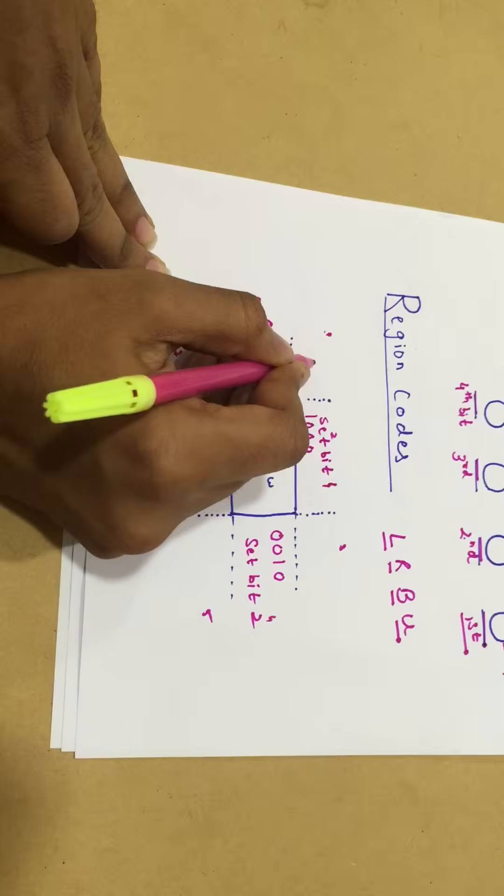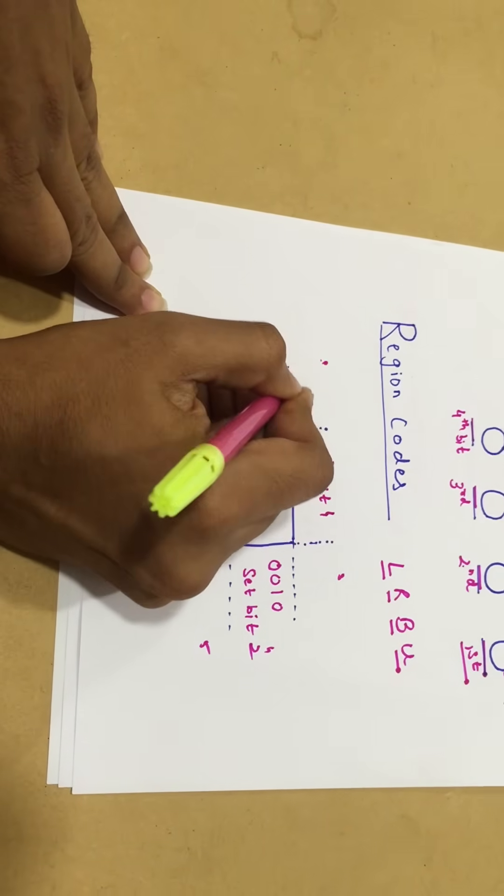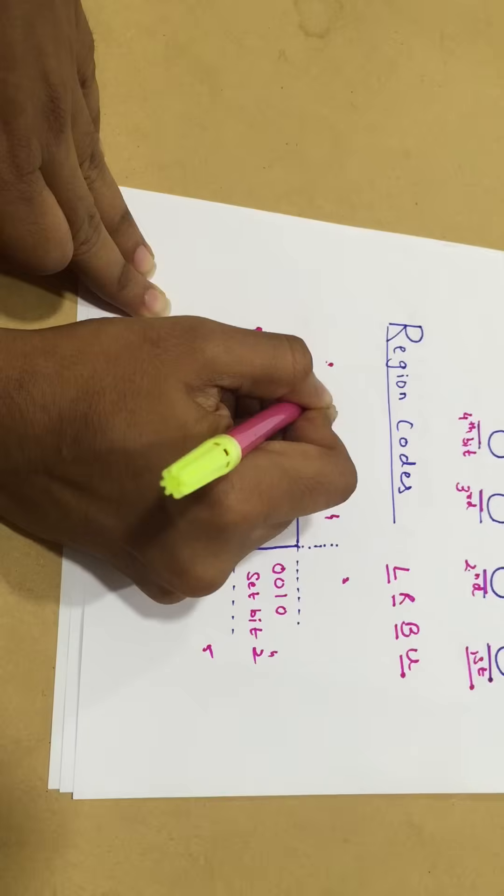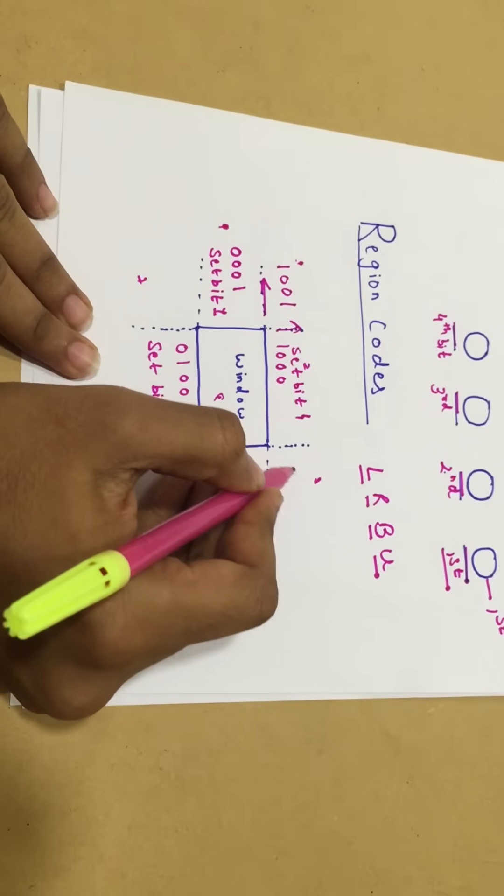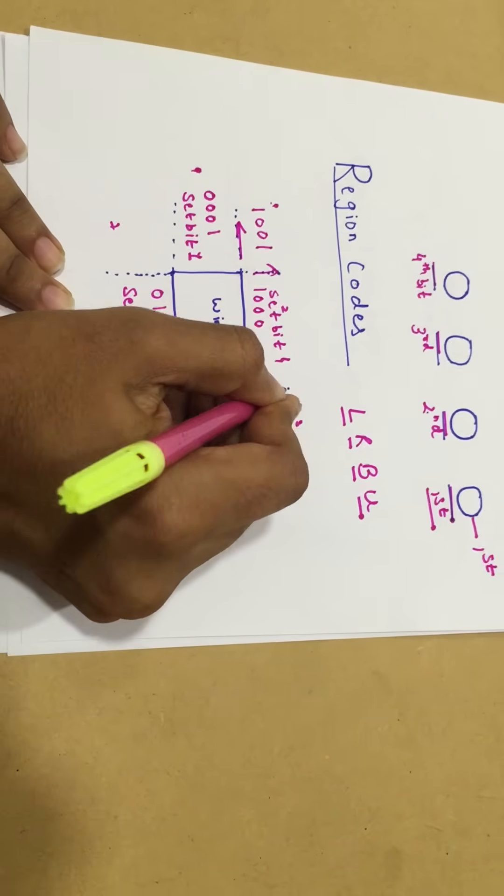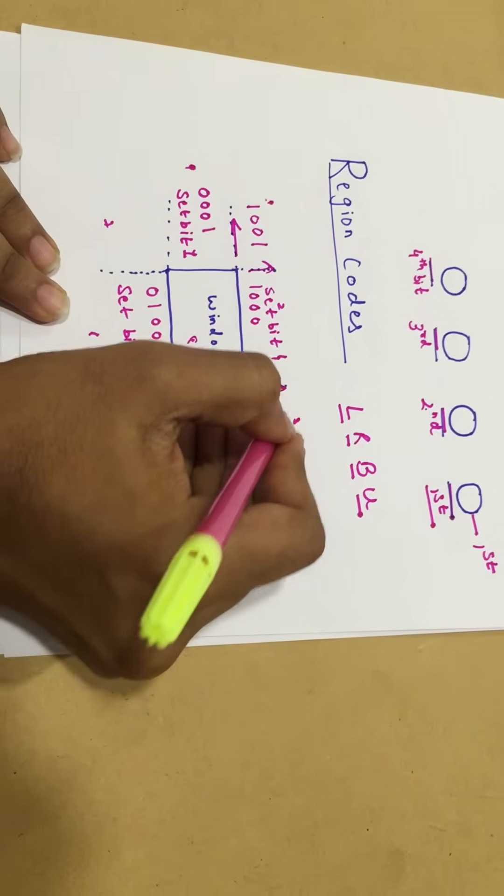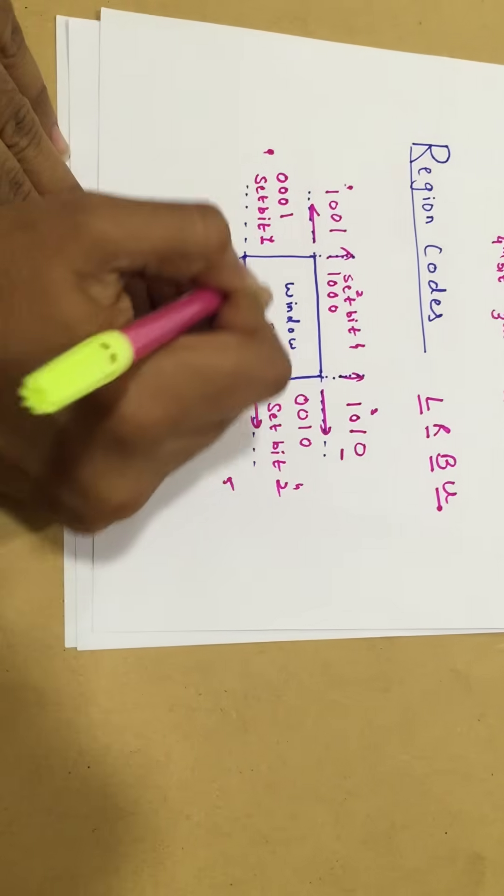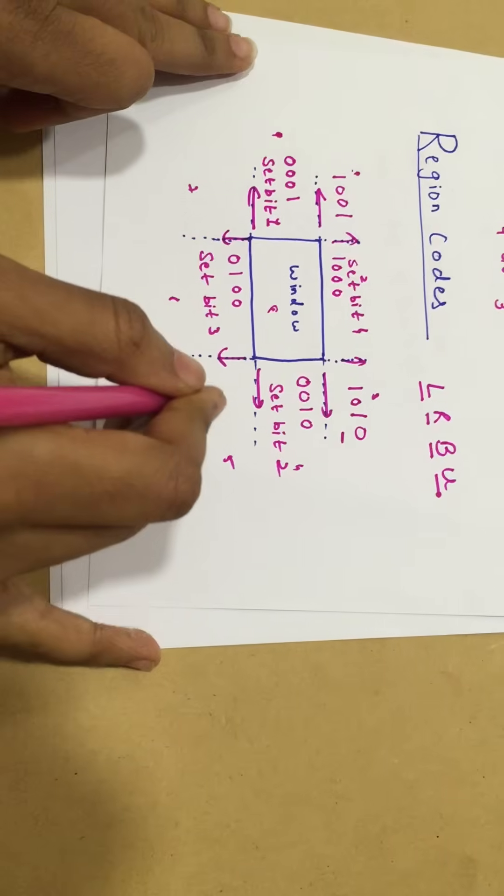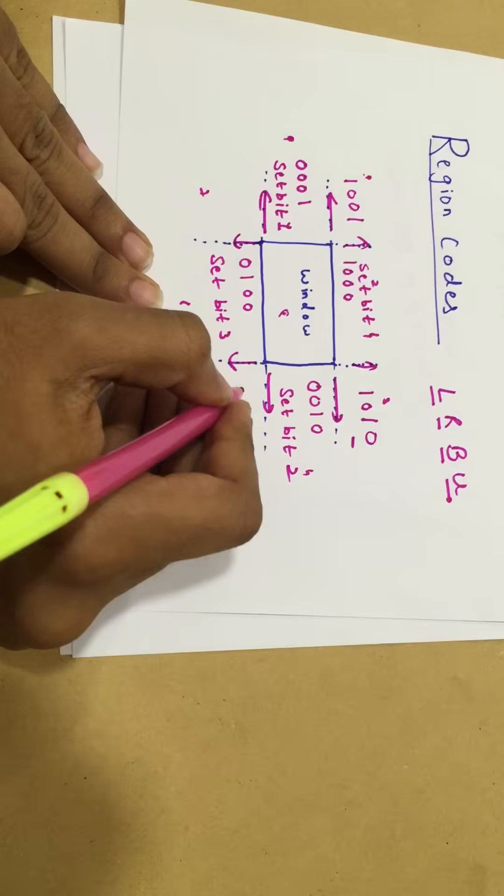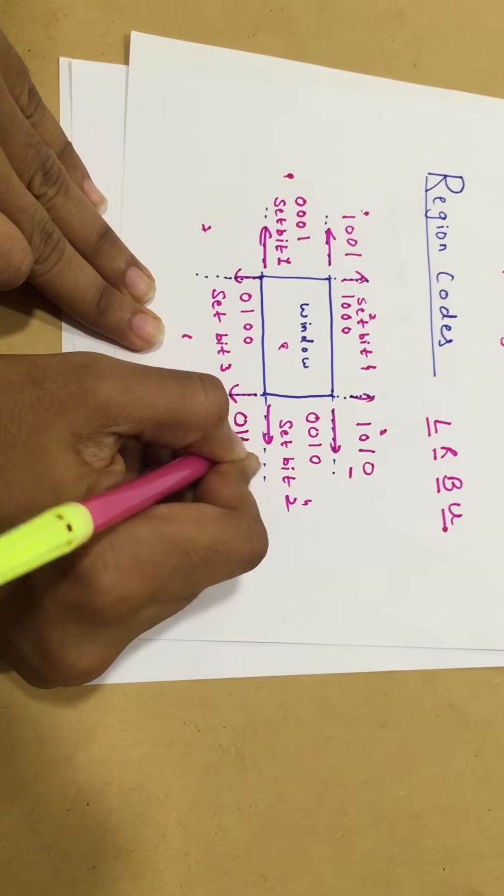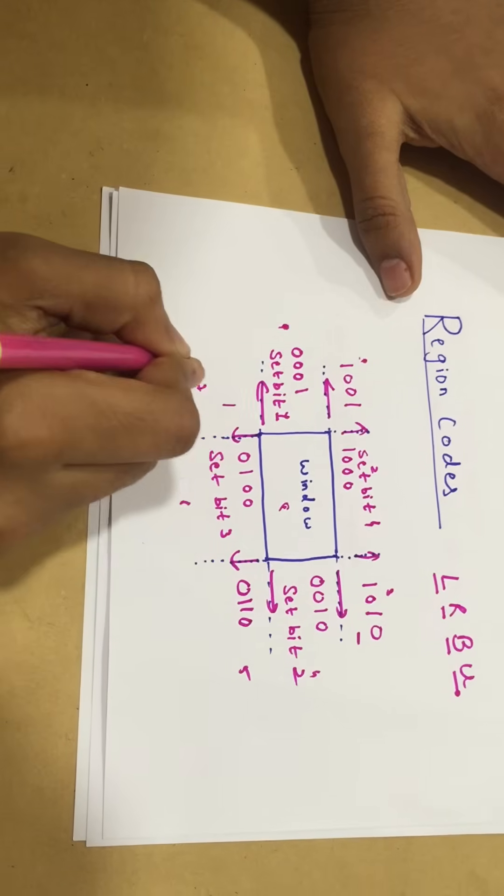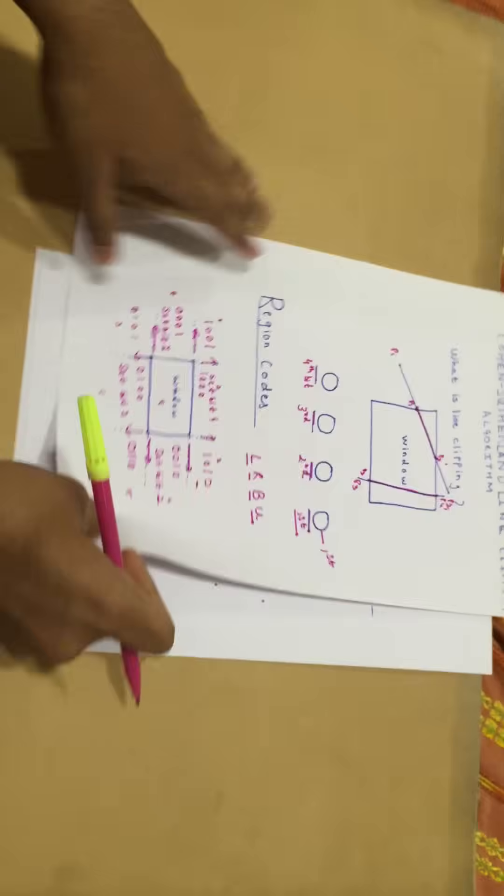Let's consider these regions. This is to my left and to my top, so I'll set my bit 4 and I'll set my bit 1. Similarly here, this region is to my right and to my top, so set bit 4 and set bit 2. If you follow the same order, the same method, you'll get set bit 2 and set bit 3. So 0,1,1,0. And here I'll get set bit 1 and set bit 3. So 1,0,1,0.